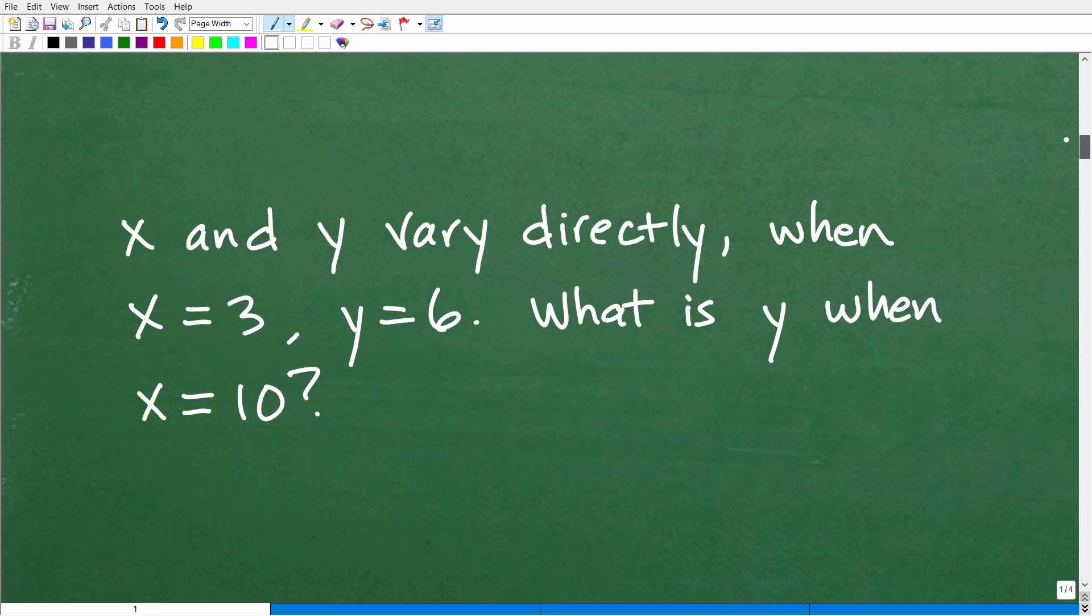Okay, so we need to understand this constant of variation. We need to find it. We can't solve any of these problems unless we have the constant of variation. And I'm going to show you exactly how to find this and solve this particular problem right now. Okay, so here we go. So x and y vary directly. Okay, so you're thinking to yourself, oh, vary directly. Well, this right here, direct, it's not going to say direct variation, but we are thinking this formula, y equals kx.